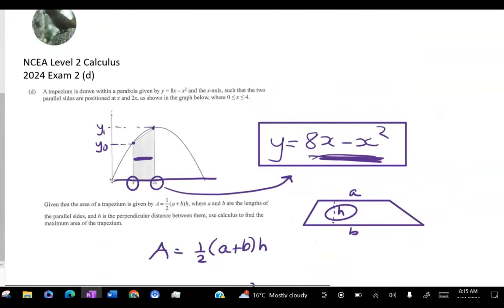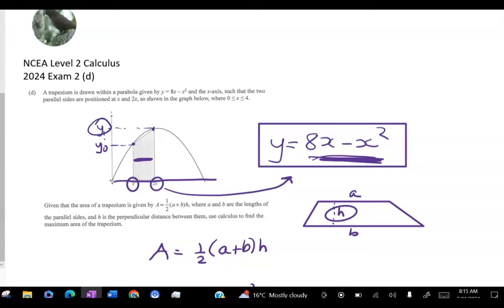So I didn't find out what this height was and I didn't find out what this one was. I just went directly to this final area expression. So reading it one more time, we have to use calculus to find the maximum area of the trapezium. So I got 40.96 for that.